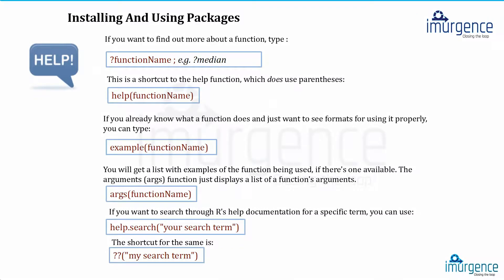Installing and using packages: if you have to use a package, you obviously need to know the functionality of a function and which package that function is kept in. Supposedly you don't have any idea where the functionality 'median' exists — median is something which exists in the base package. To know more about that function, all you need to do is put a question mark and say 'median', and that will pop up a help file on the bottom right quadrant of your RStudio.